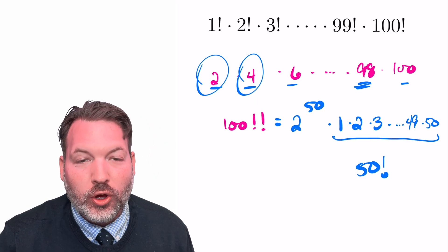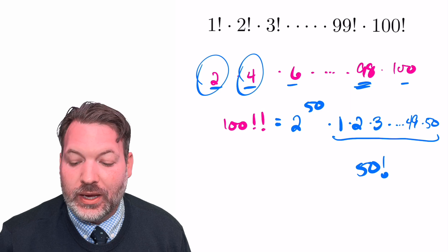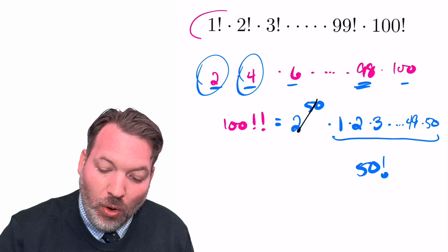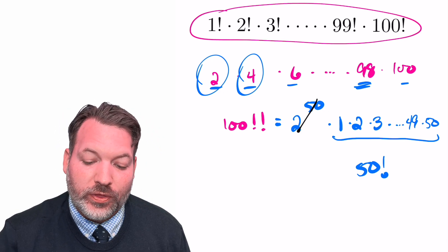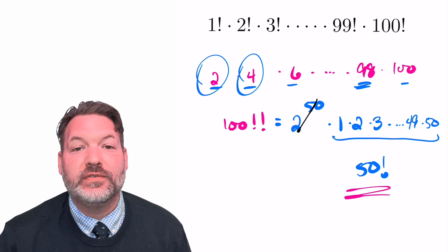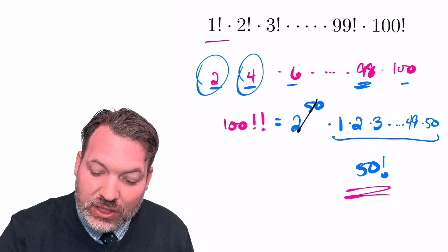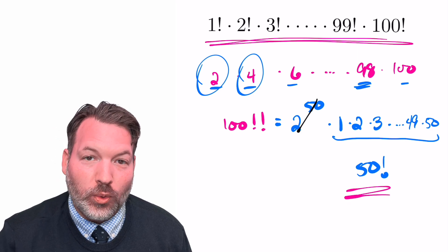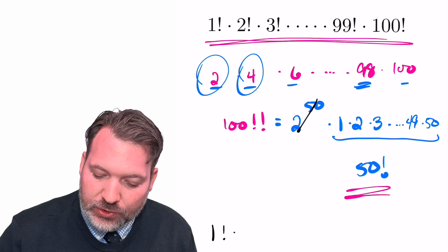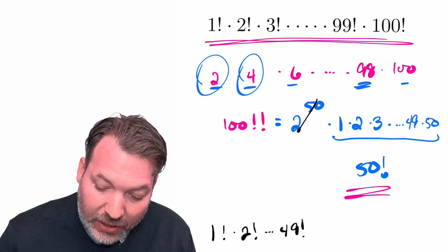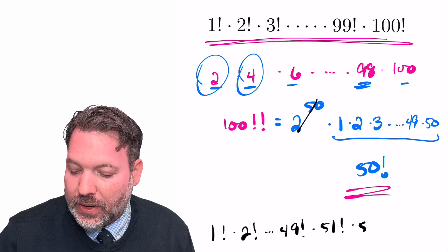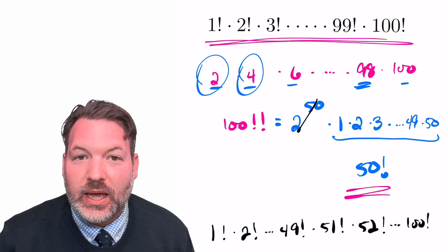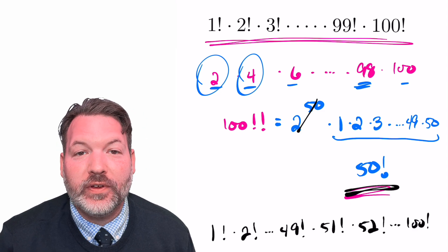Finally, this 2 to the 50th obeys the same rule of perfect squares that we've already discussed. It has an even exponent, and so this is itself a perfect square. The only thing from this giant factorial product we started with that's not a perfect square is a 50 factorial. And so if we just divided out a 50 factorial from that original factorial product, we would have a perfect square. So there you have it, 1 factorial times 2 factorial, all the way up to 49 factorial, times 51 factorial, times 52 factorial, all the way up to 100 factorial. That product is a perfect square, and all we had to get rid of was that 50 factorial.